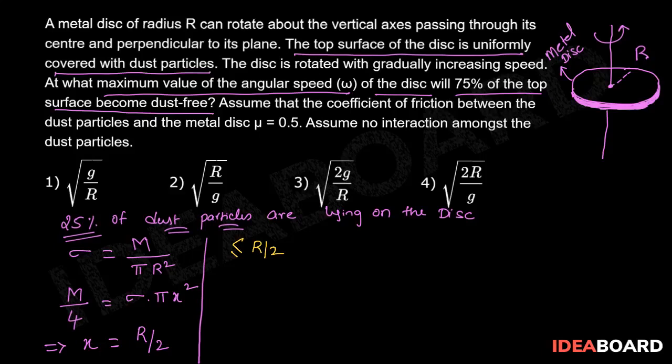Now the necessary centripetal force for these dust particles which are at a distance less than R by 2 from the axis of rotation is provided by the frictional force between the disc and dust particles. So if we draw a free body diagram on the particle which is at a distance of R by 2 from the axis of rotation.